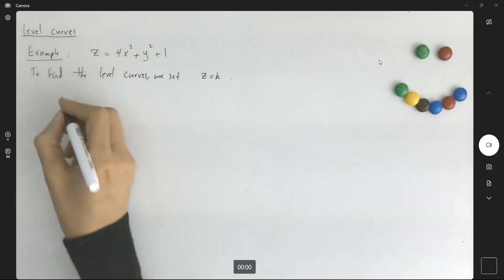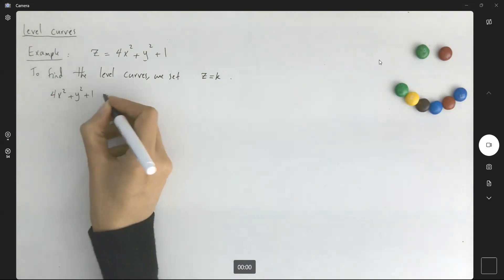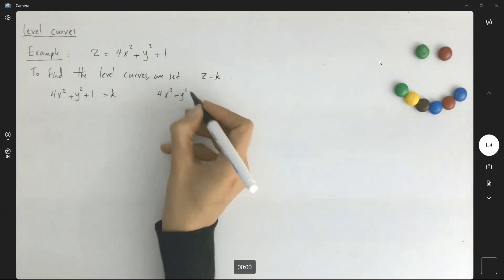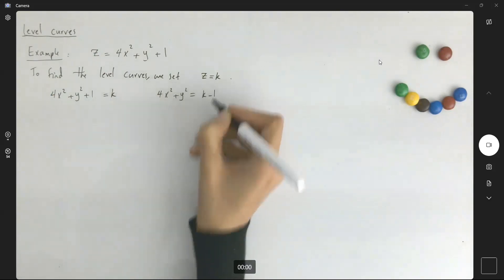So let's see what we have here. We have 4x squared plus y squared plus 1 equals to k, or 4x squared plus y squared equals to k minus 1.